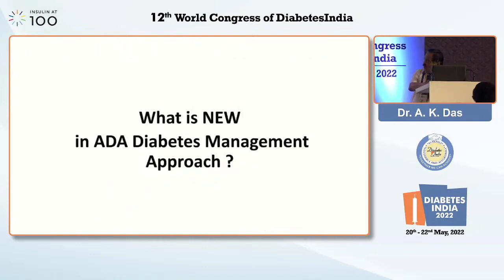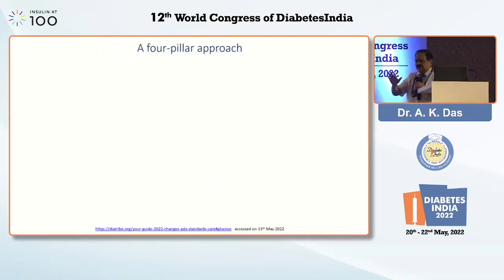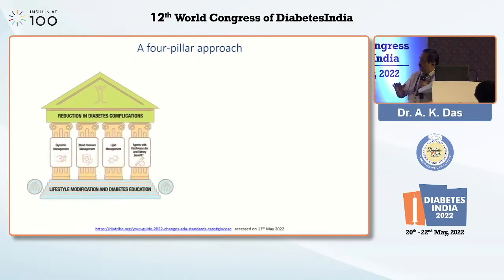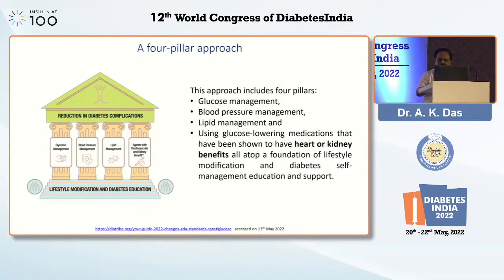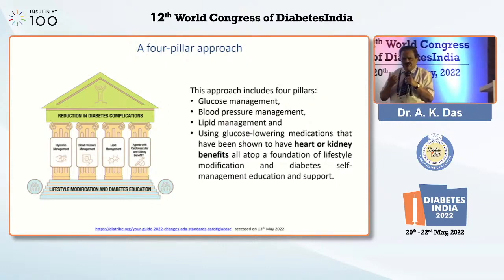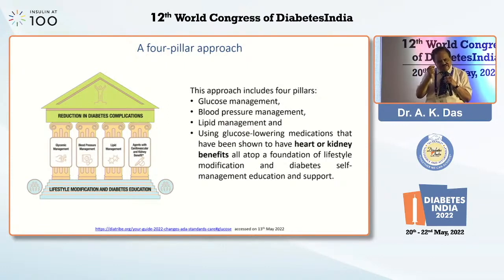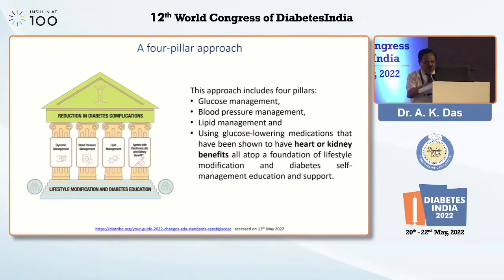The four-pillar approach has been talked up by RSSDI first; others have emulated it. Today we have a four-pillar approach where we take care of: number one, glucose management; number two, blood pressure management; number three, lipid management; and number four, using glucose-lowering medications that have shown heart and kidney benefits — atop a lifestyle modification and self-management education and support. This is given emphasis in 2021-2022 in all the global guidelines.